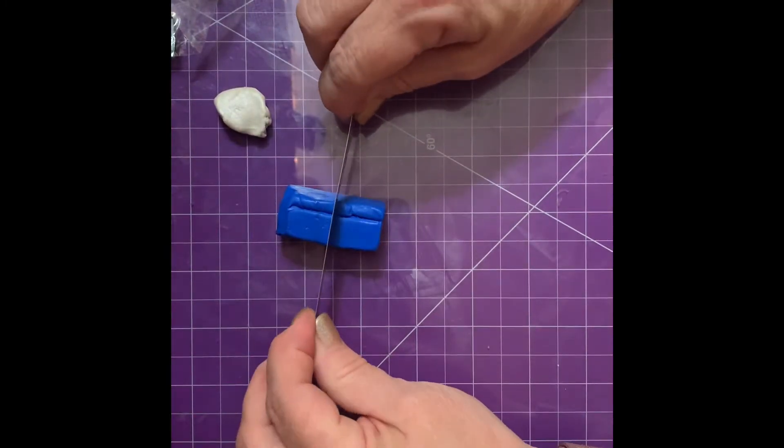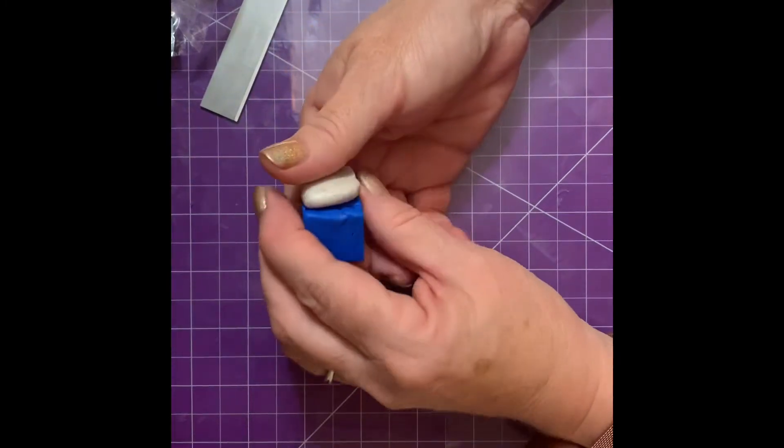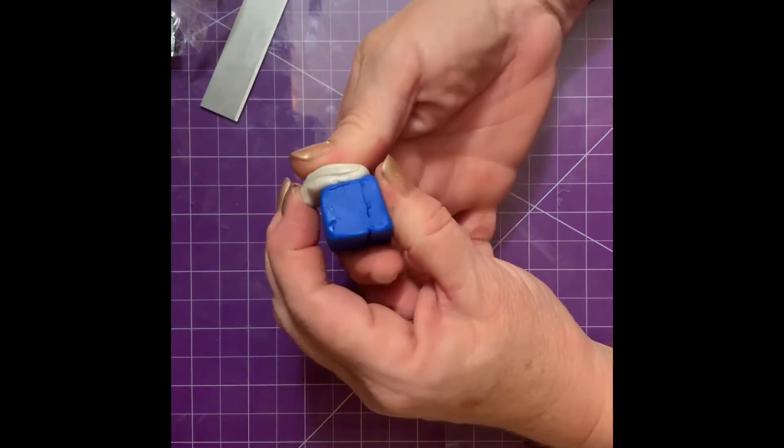This one I'll do in blue and I'll probably get a blue mica powder to go with it. I'm just going to cut this in half or close to. I'm going to add this, plus it'll lighten it too.